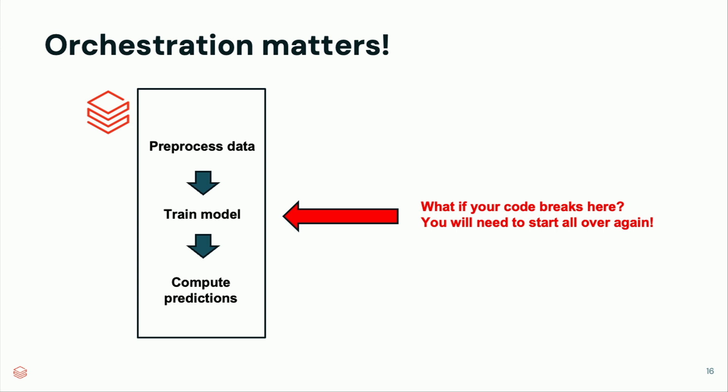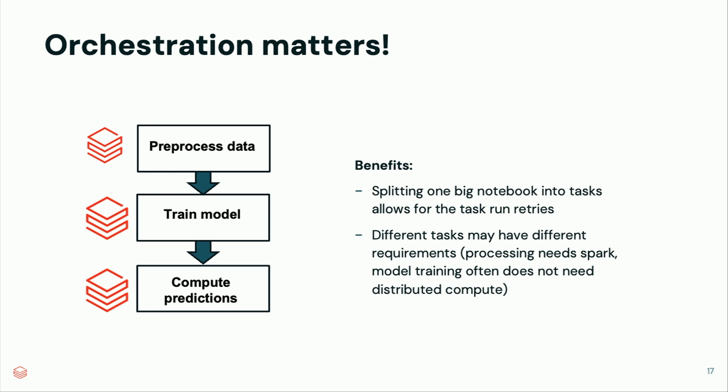Orchestration matters a lot too. If you have a big notebook with thousands of lines of code and it breaks in the middle, you have to rerun the whole thing. Instead, split the three main steps — preprocessing, model training, and predictions — into separate tasks. You can then retry at any failing step. Different tasks can also have different compute requirements: preprocessing is often Spark-heavy and needs distributed computing, while model training usually needs single-node compute.